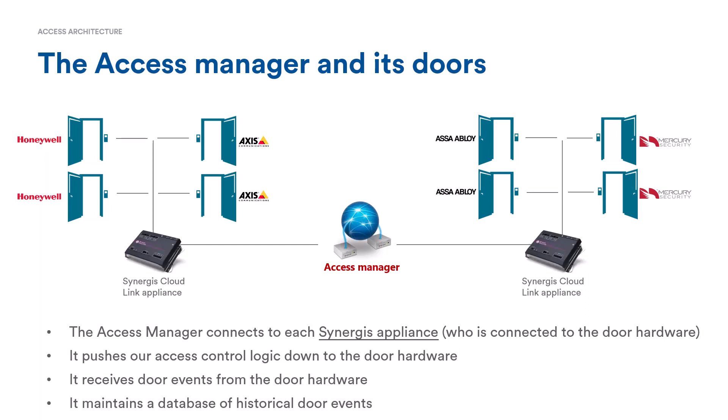Something worth noting is that open architecture happens at the server level for video units, but at the appliance level for door hardware. It's the Synergis CloudLink appliance — not the access manager role — that connects to, talks to, and manages all the different kinds of door hardware, including a mix of iStar, AXIS, Mercury, and ASSA Abloy door hardware. That concludes our overview of access architecture.